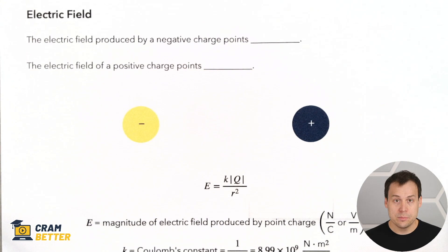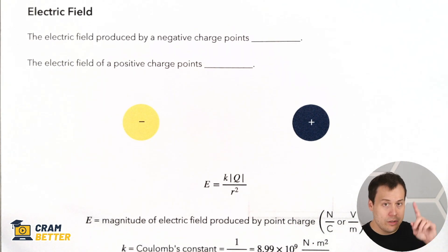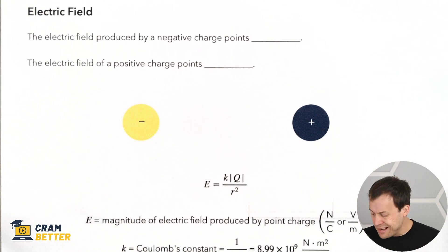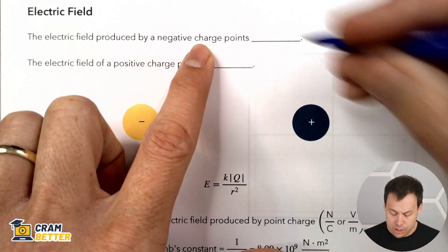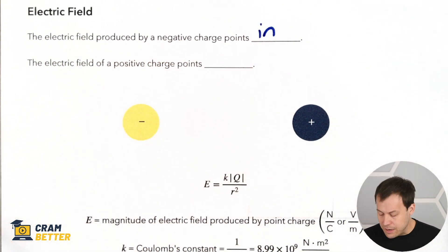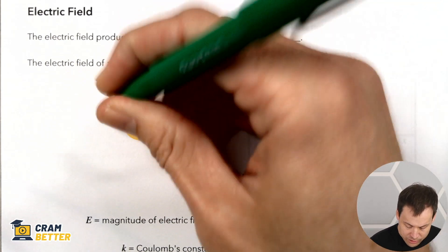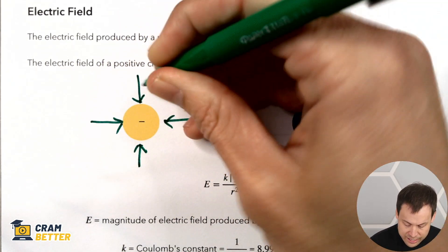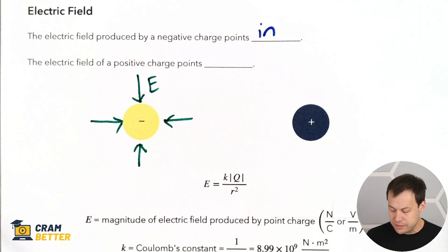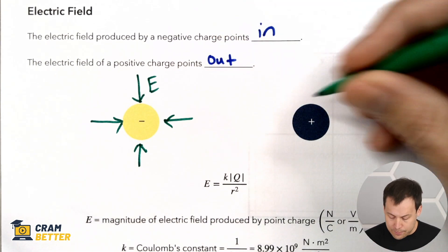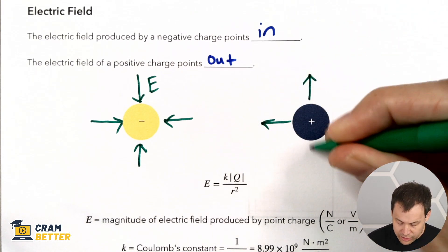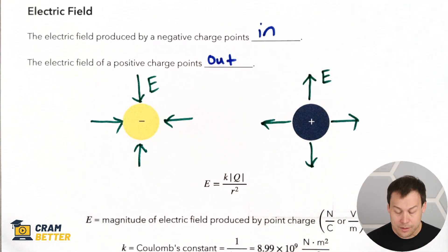Let's go over that exception. Mass, for gravity, only comes in one flavor — it's all positive mass. Electric charge can be positive or negative, so the field differs a little bit. The electric field produced by a negative charge points inward, just like a gravitational field. But the electric field of a positive charge points outward — it's exactly opposite, going outward in all directions. That's the main difference between gravity and electric field.